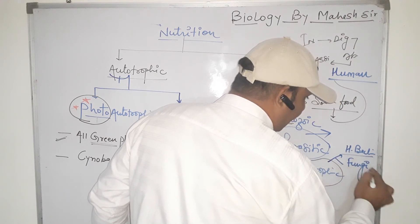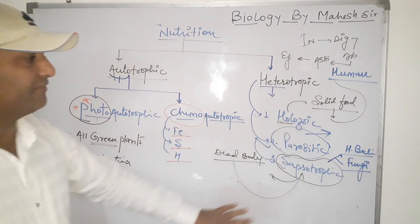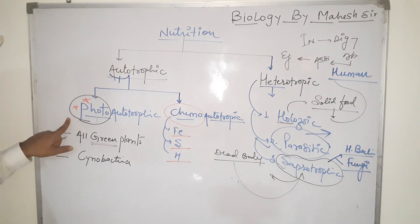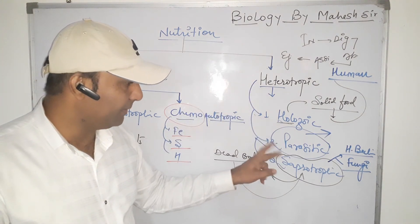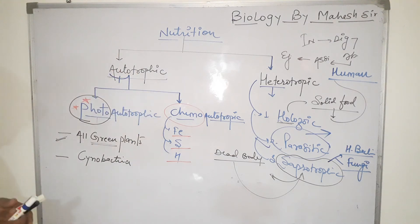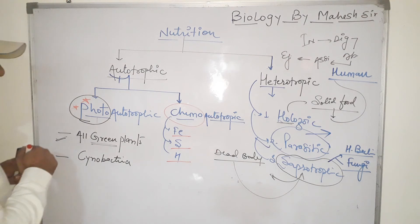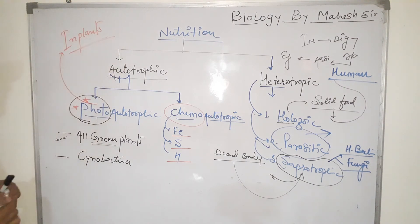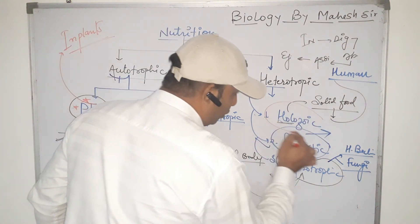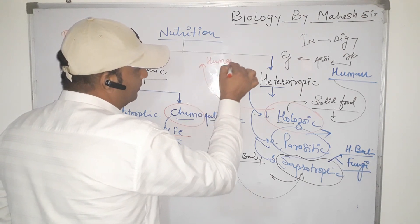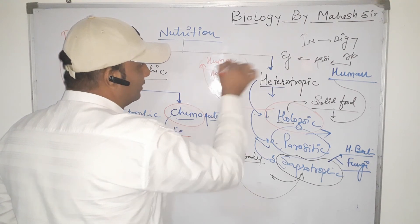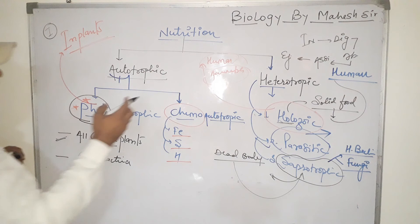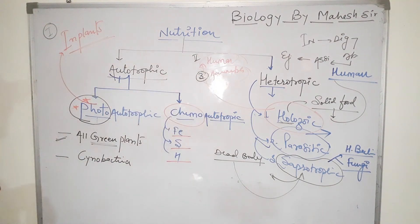Fungi and heterotrophic bacteria are both examples of saprotrophic nutrition. This completes the overview of nutrition, covering seven to eight terms: nutrition, autotrophic nutrition, phototrophs, chemo-autotrophs, heterotrophs, holozoic nutrition, parasitic nutrition, and saprotrophic nutrition. In the next part of this class, we will study in detail: photosynthesis in plants, and holozoic mode of nutrition in humans and in amoeba.